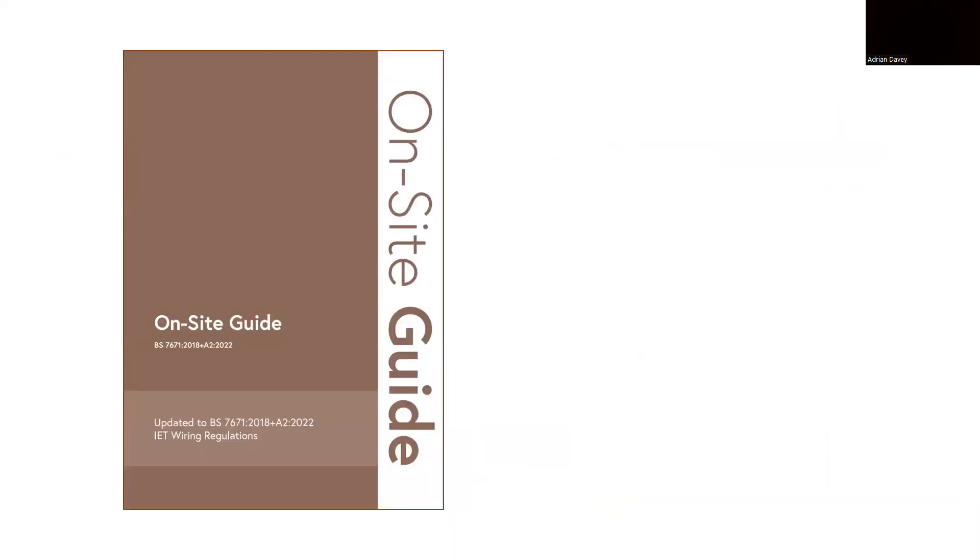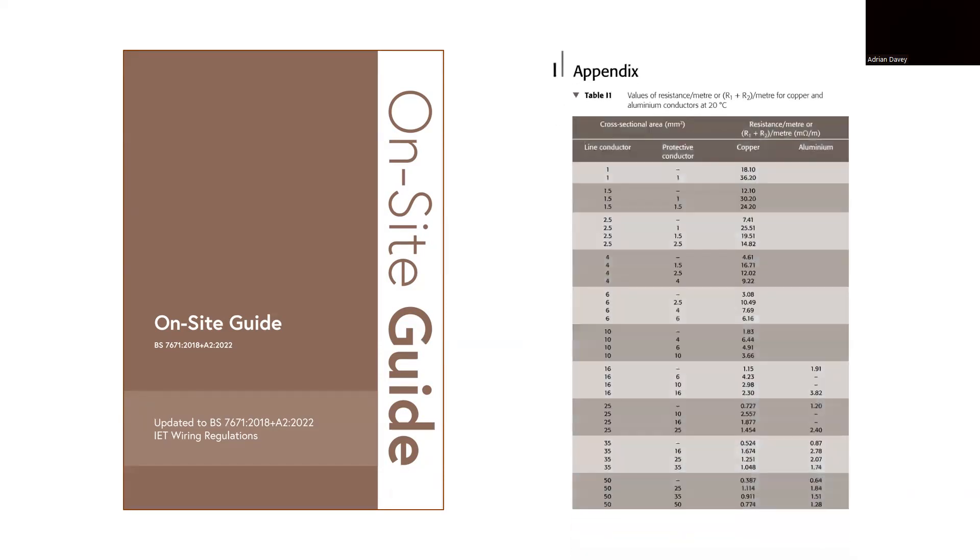Throughout my inspection and testing series, we will be utilizing the on-site guide, currently published by the IET, and if you aspire to be a knowledgeable and credible electrician, I highly recommend acquiring a copy if you haven't already. In this video, we are specifically interested in Appendix I and Table I1, which give us the resistance of copper per meter.